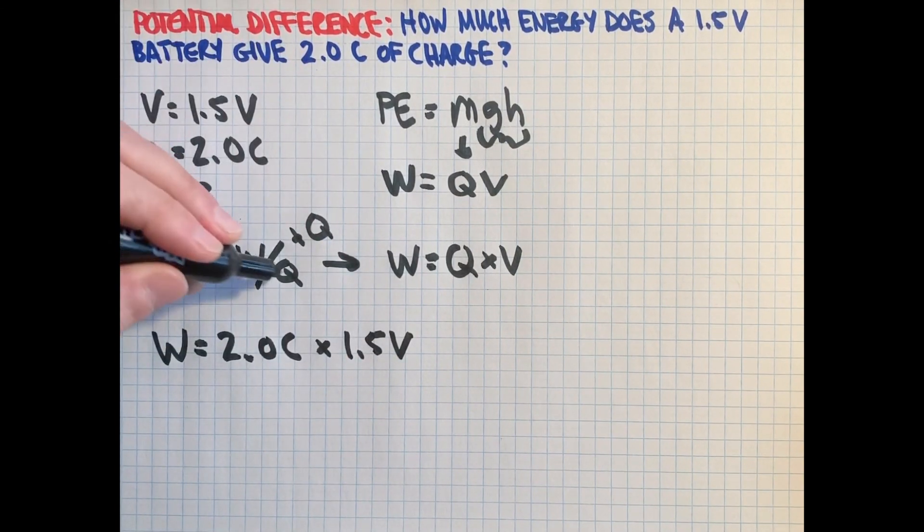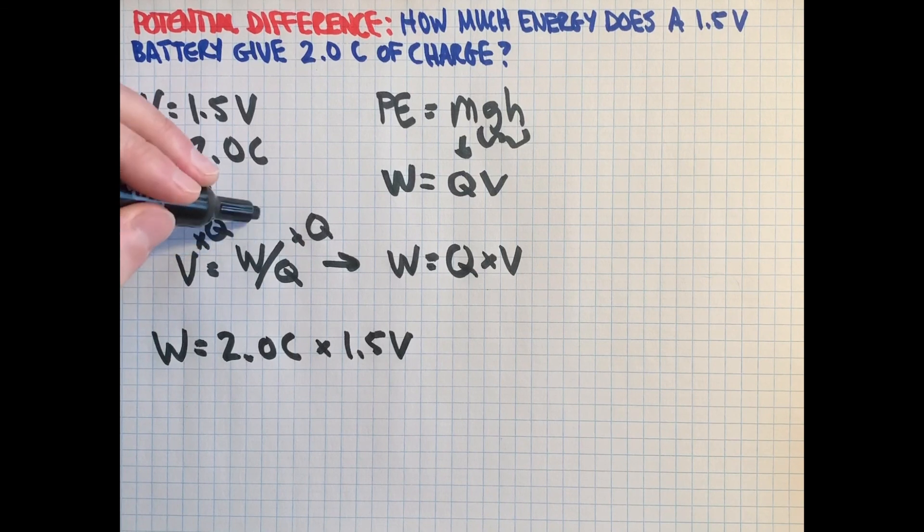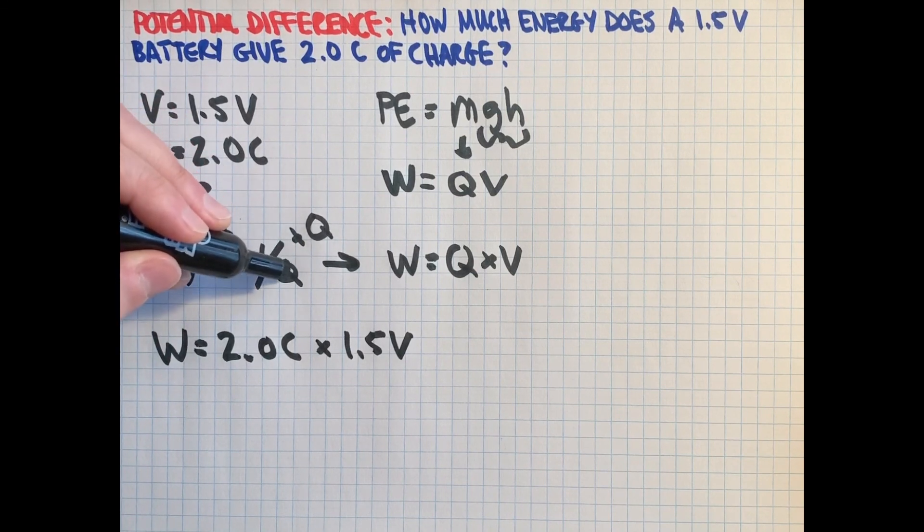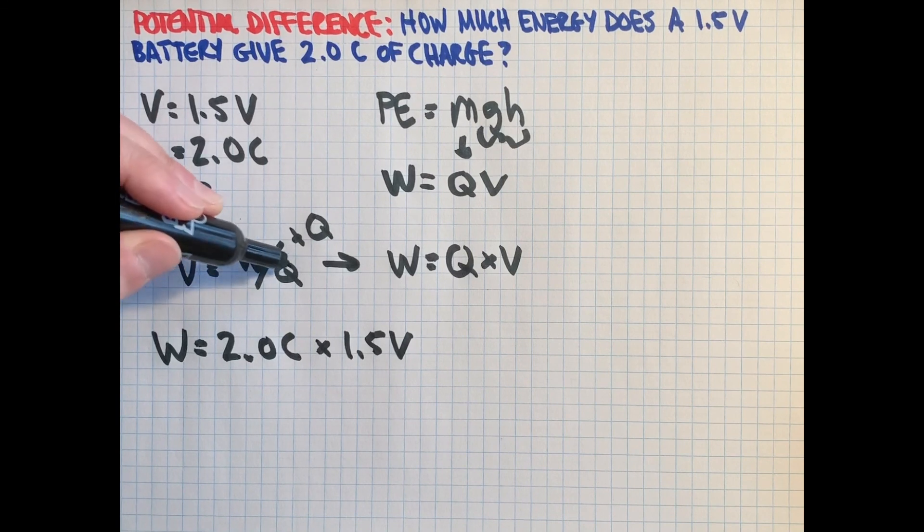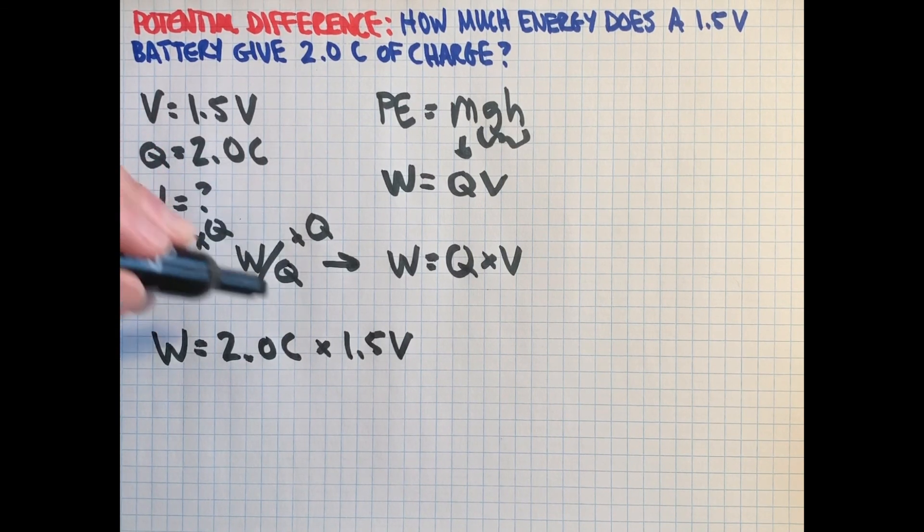And note again, if we looked at our units here, work would be in joules and charge is in coulombs. And so a volt is really a joule per coulomb.